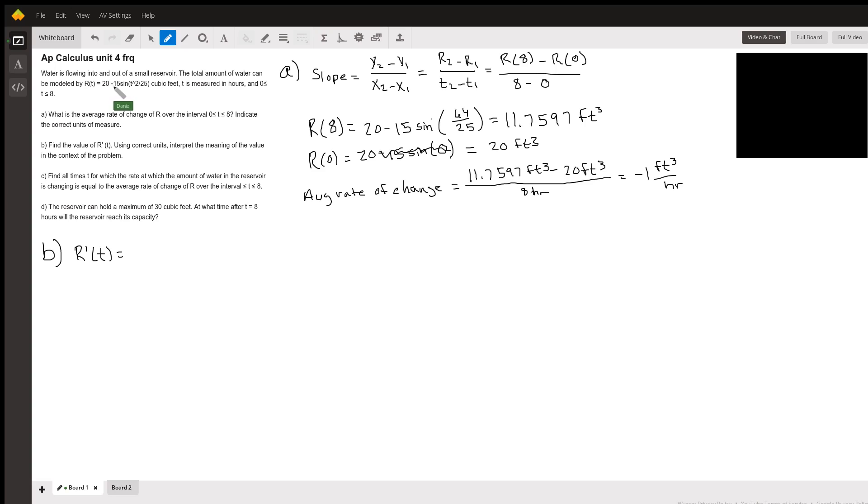And then this next part, negative 15 times the sine of this stuff inside, I can bring the negative 15 out to the front because it is multiplied to our function in question. And then let's start to do the chain rule. We have to do the chain rule because there's a function, this T squared divided by 25, inside of another function, the sine.